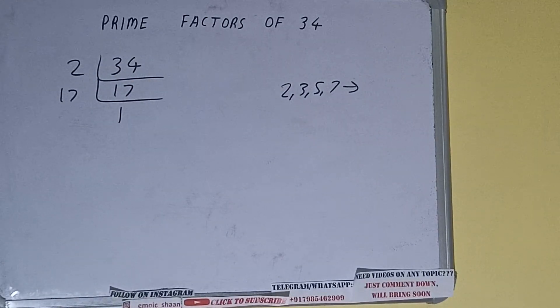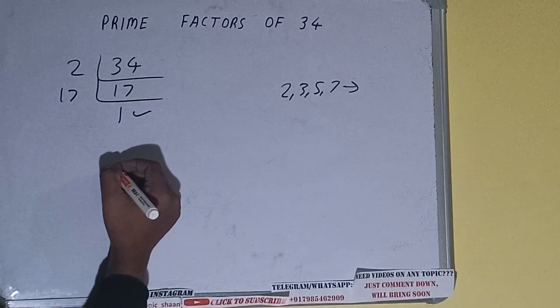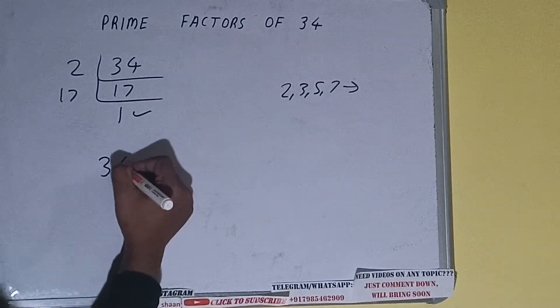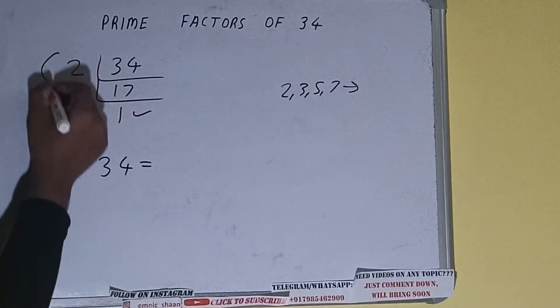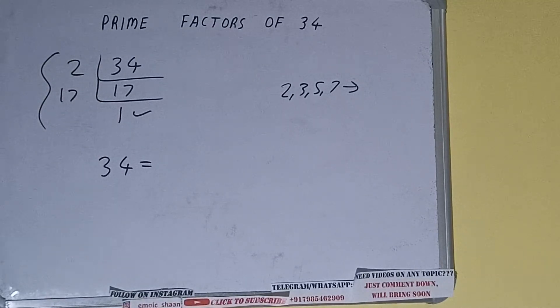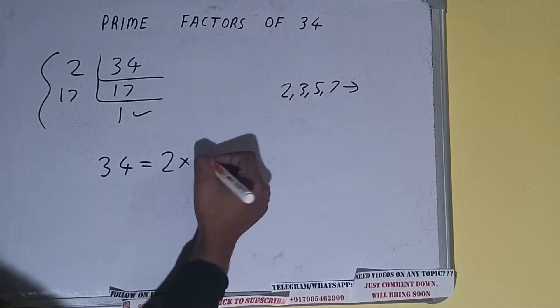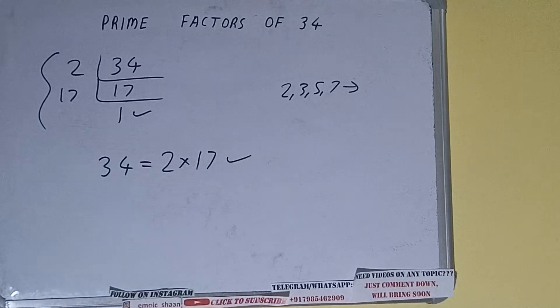Once we get 1 we need to stop and do one last thing that is prime factor of 34 equals 2. Multiply whatever we have on the left hand side that is 2 cross 17. That will be the answer.